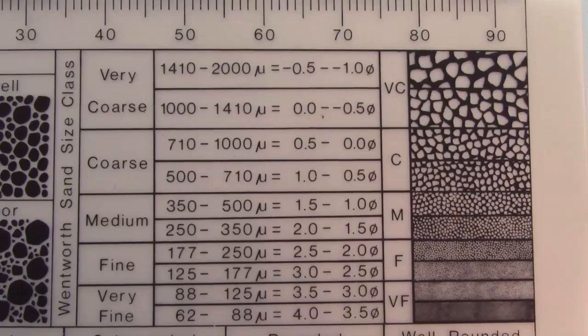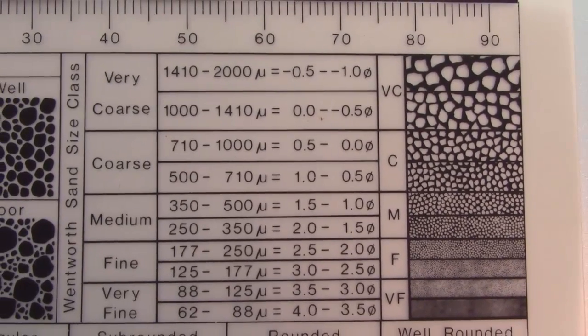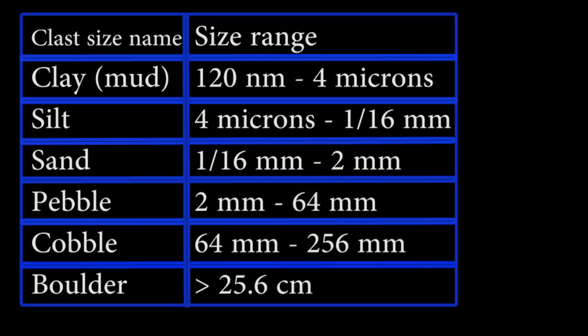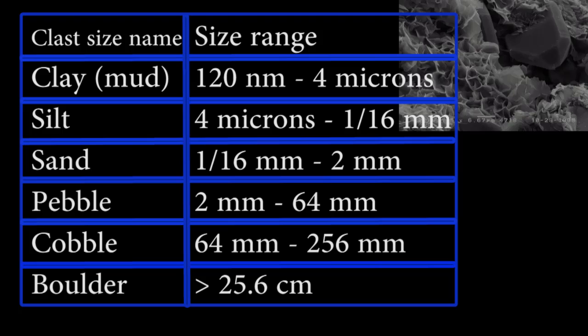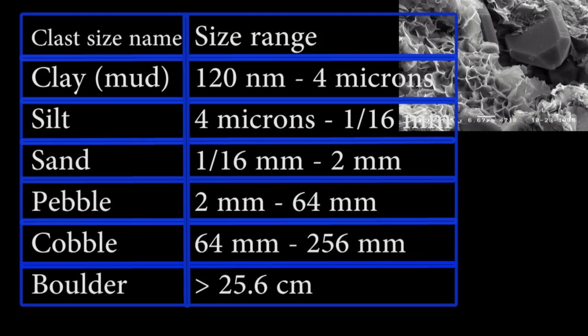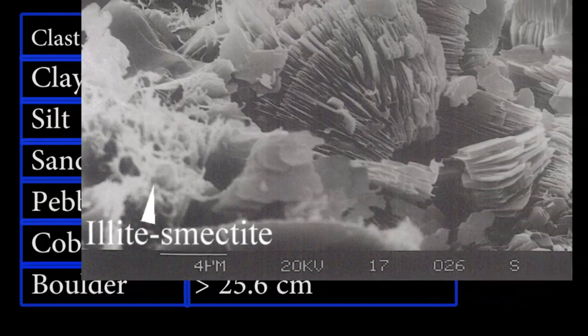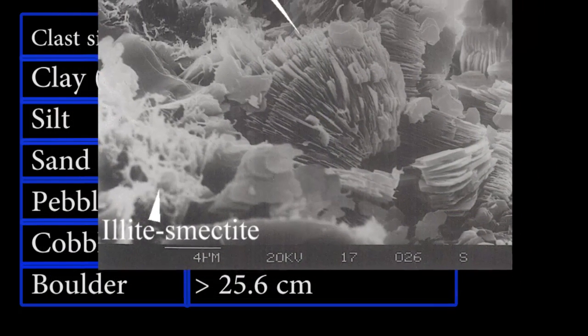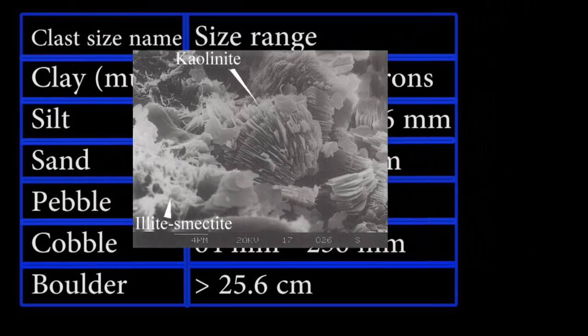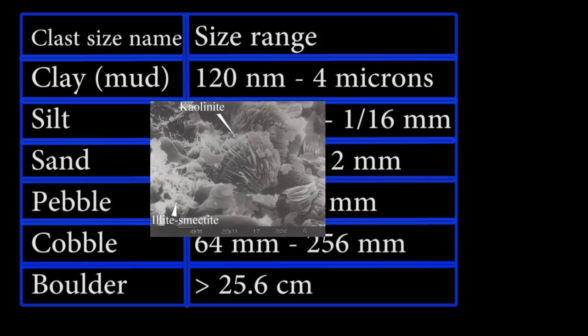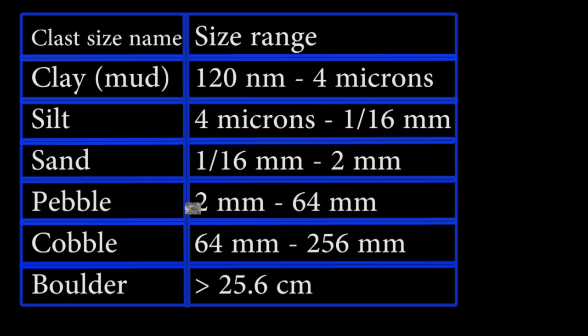The smallest grains — what most people call mud — are in the clay category, and include the smallest undissolved clasts up to around four micrometers, which is four thousandths of a millimeter, or four millionths of a meter. The smallest clay can get down to around 120 nanometers.